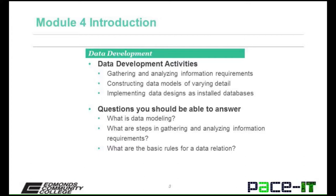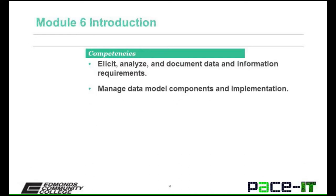The questions you should be able to answer at the end of this module would be: What is data modeling? What are the steps in gathering and analyzing information requirements? What are the basic rules for a data relation? The competencies you should be gathering within Sections 1 and 2 would be to elicit, analyze, and document data and information requirements, and then manage data model components and implementation.